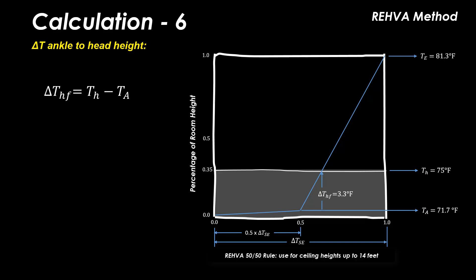To check that the temperature differential between floor and head height is within comfortable limits, simply subtract the ankle height temperature from the head height temperature, which is 3.3°F. This is well below our target of 5.4°F for seated occupants.